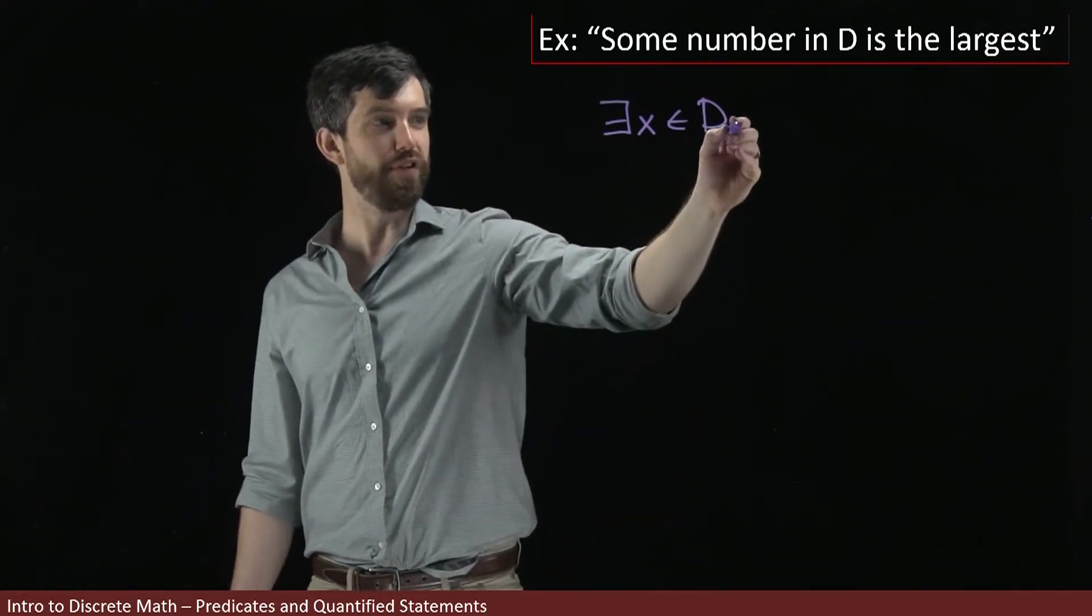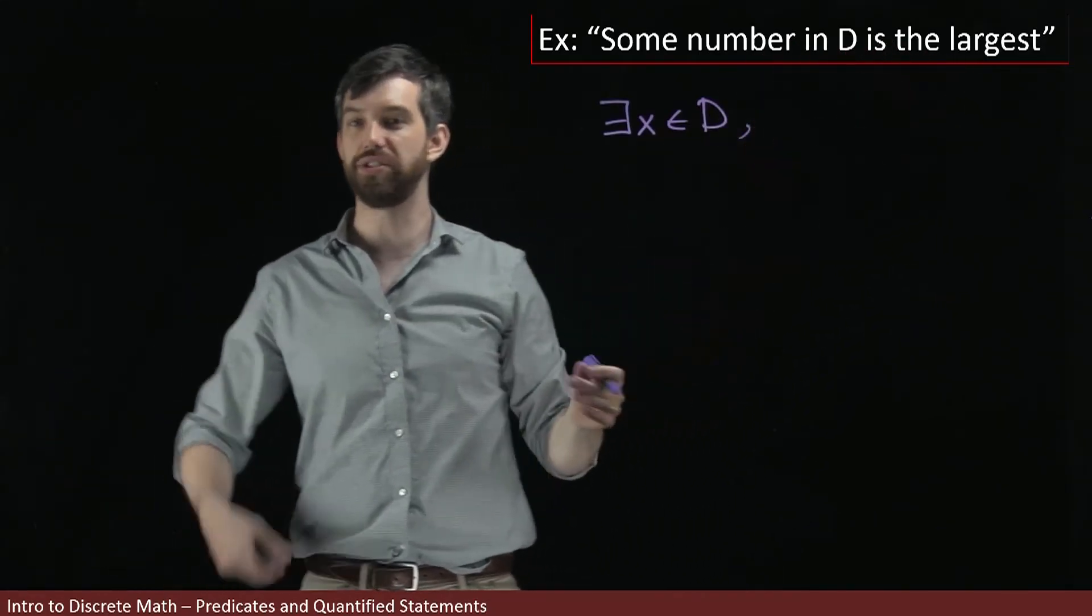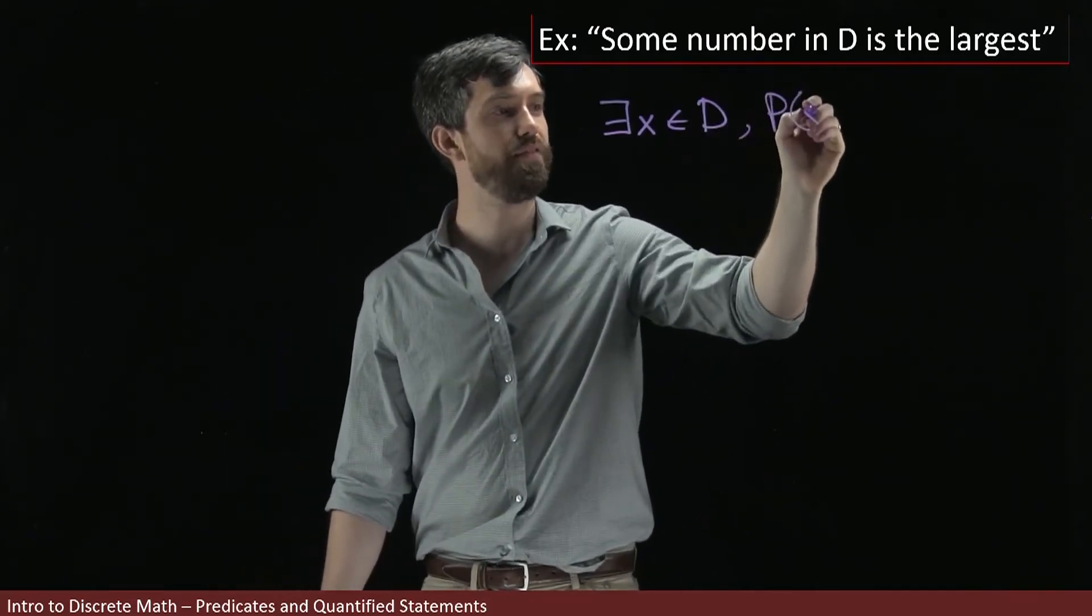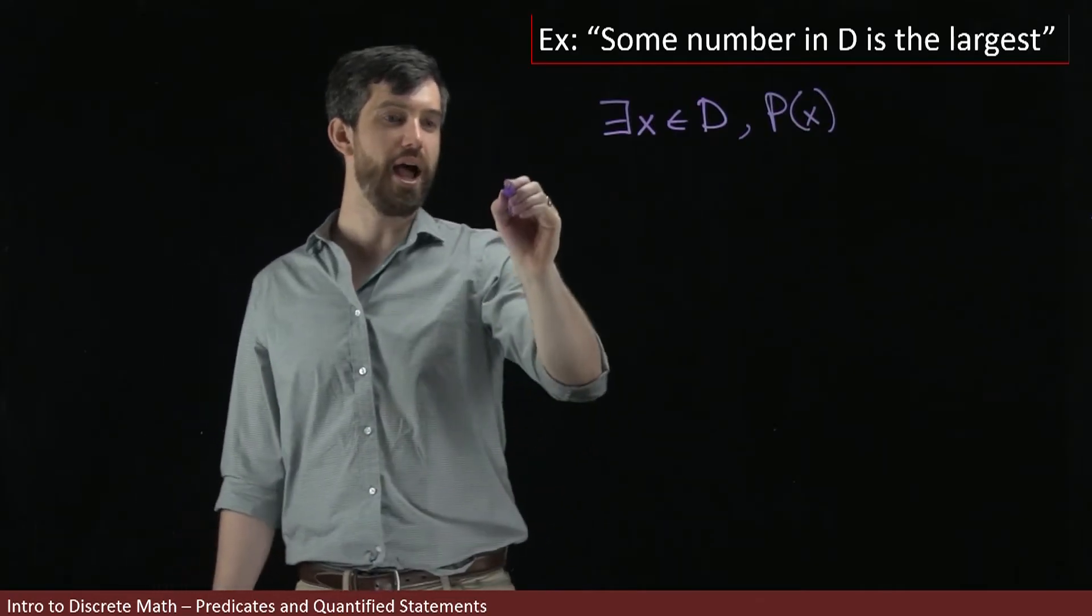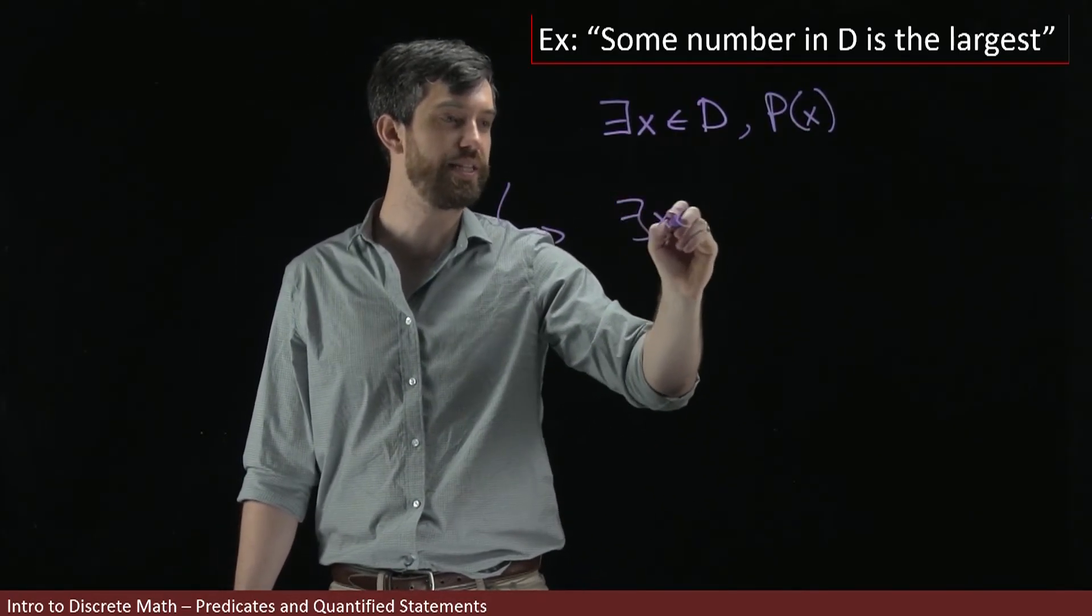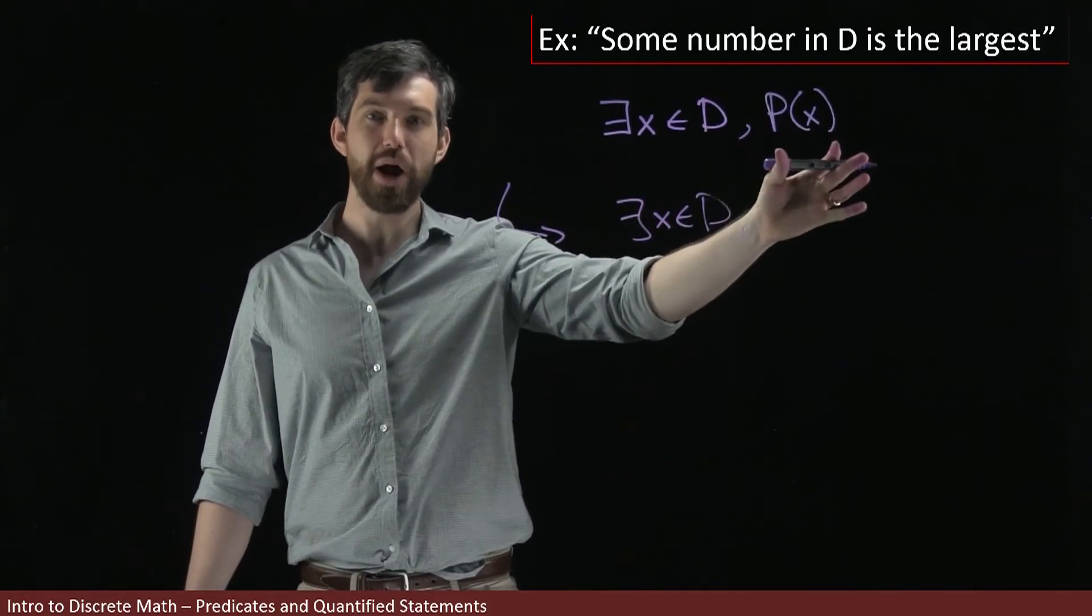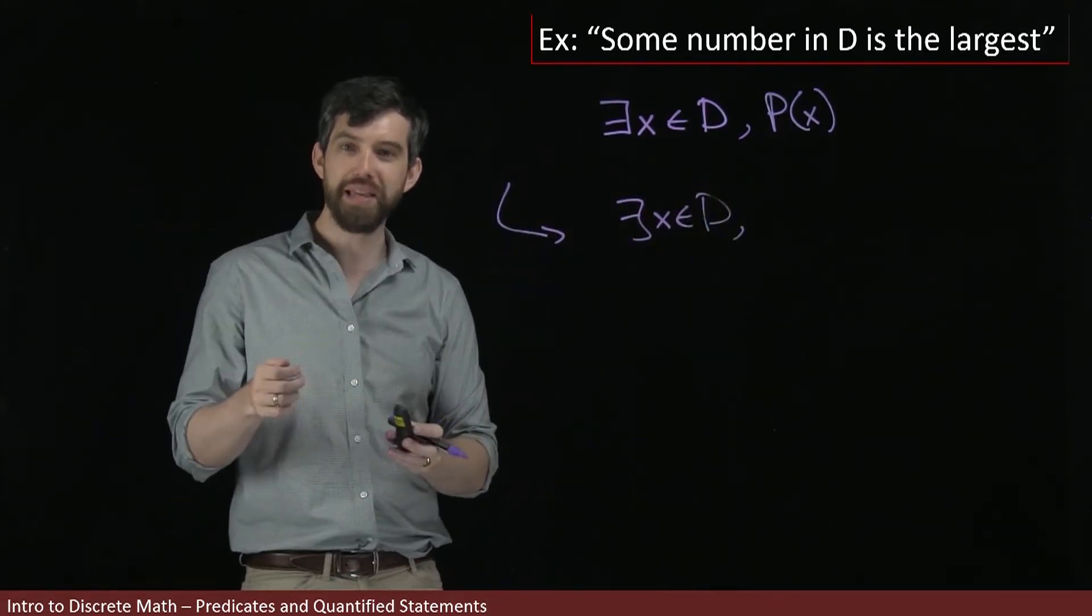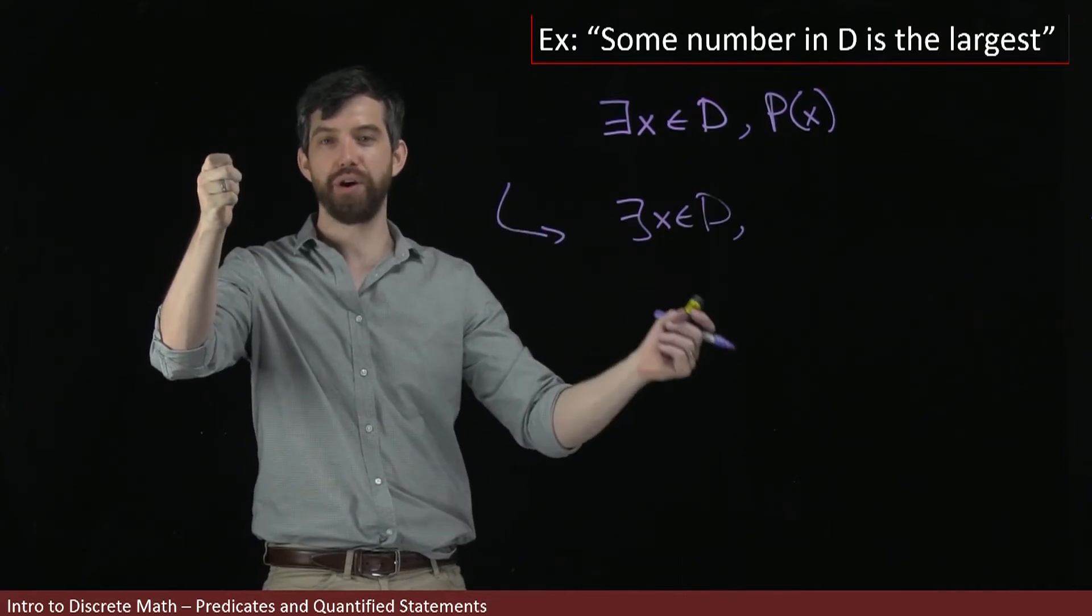And at the first level of analysis, it's got some property: is the largest number. I could call that p of x. But as we've seen before, I could expand this out. I'll keep the there exists in the domain part. But I'll open up my predicate. If it's the largest number, then that x is bigger than every other y.